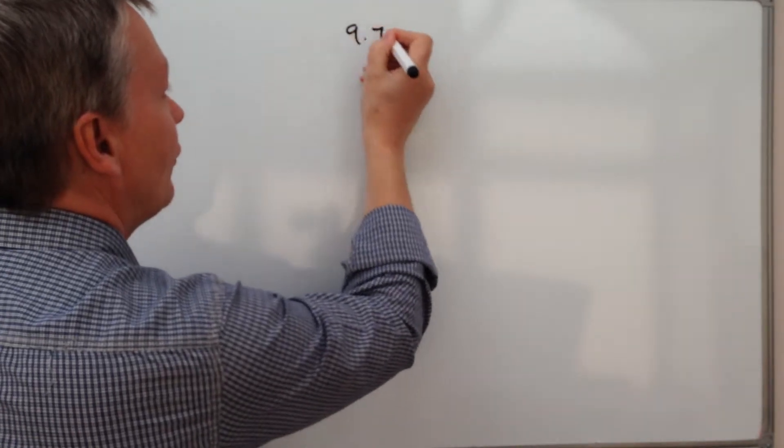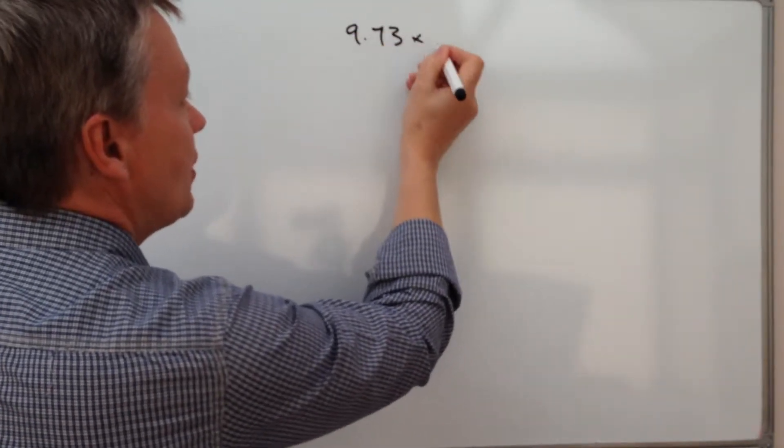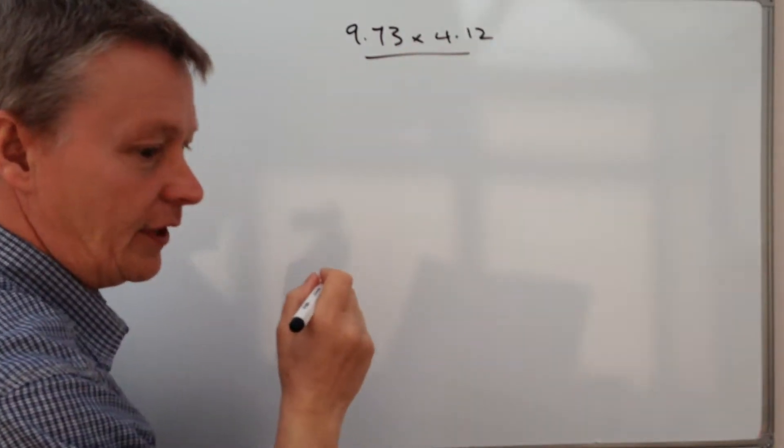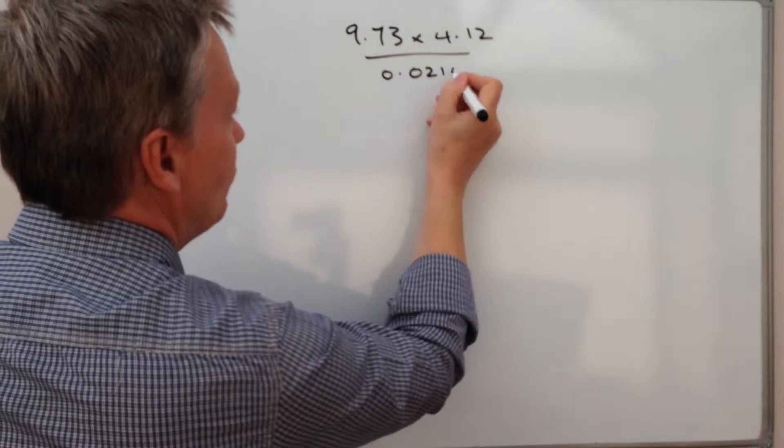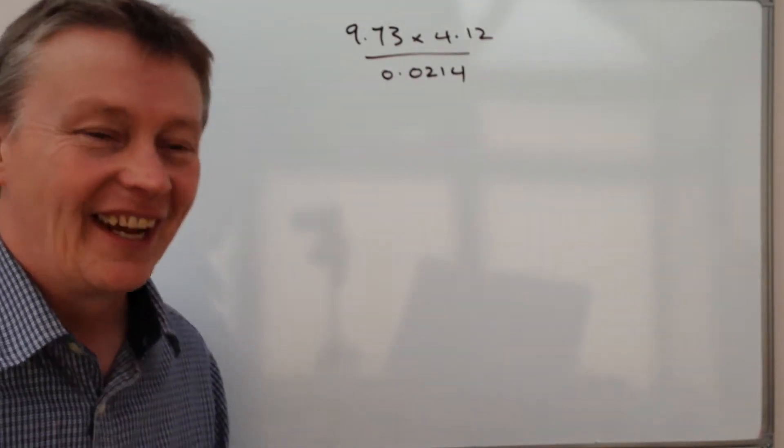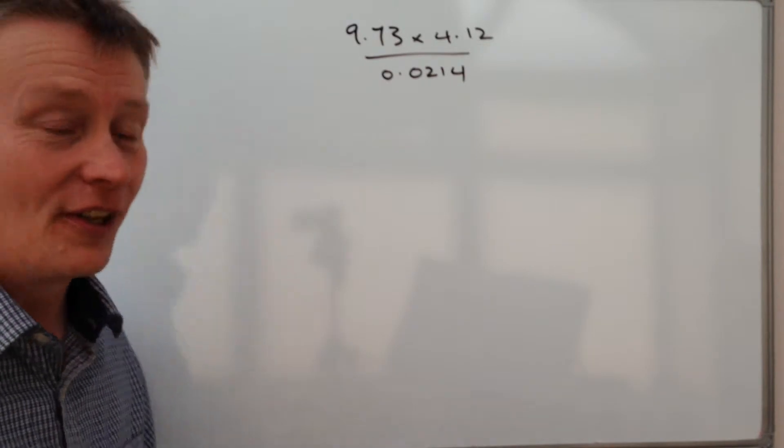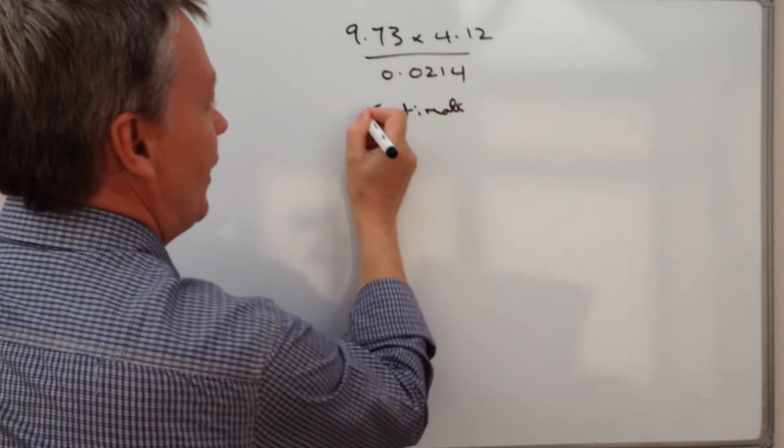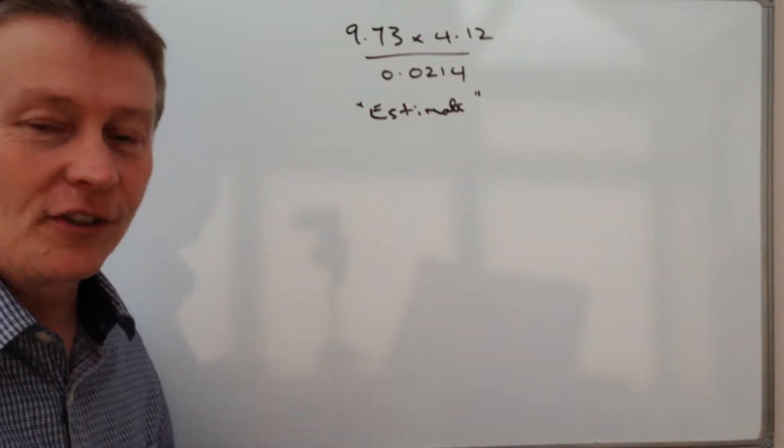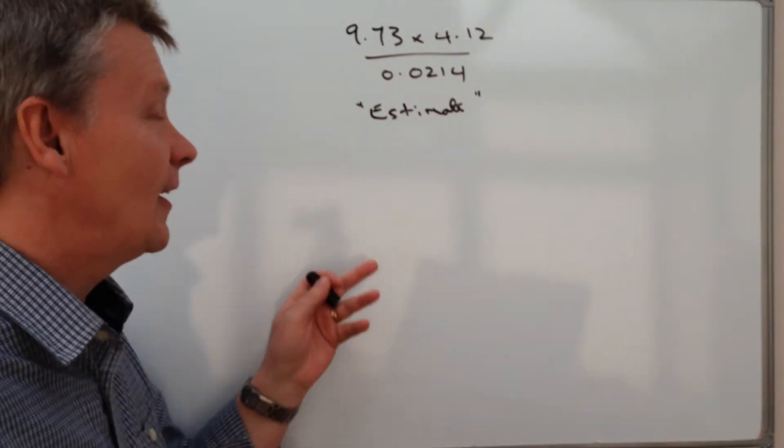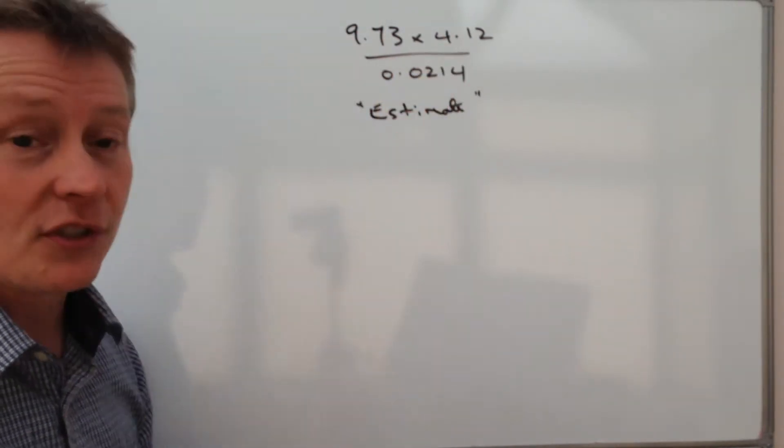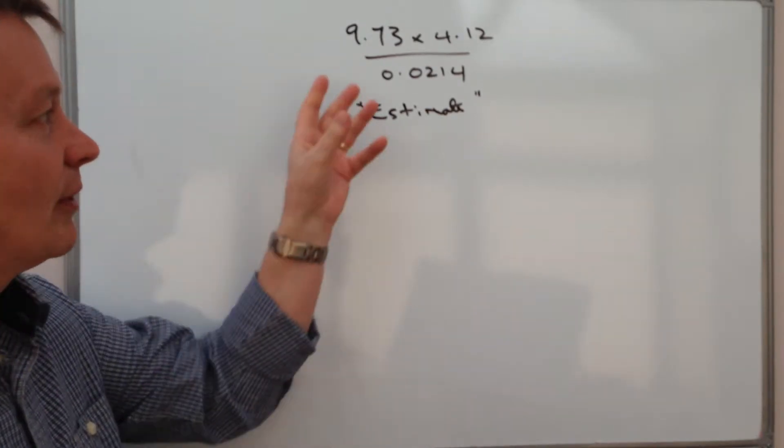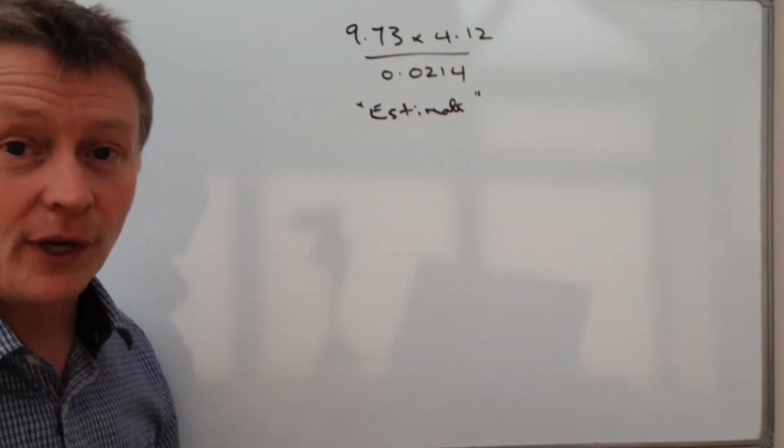So it's 9.73 multiplied by 4.12, and that's all divided by 0.0214. Okay, so what we're looking to do is to take those numbers and calculate an estimate of this information. The general advice is to change or to round each of these numbers to one significant figure. If you have a look in the previous videos, then there are some examples of very similar questions to this one.